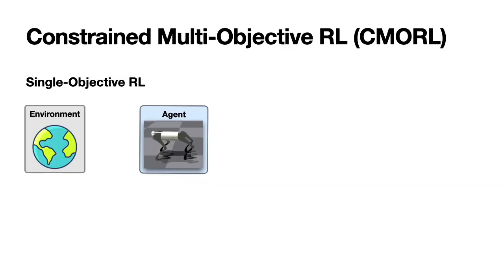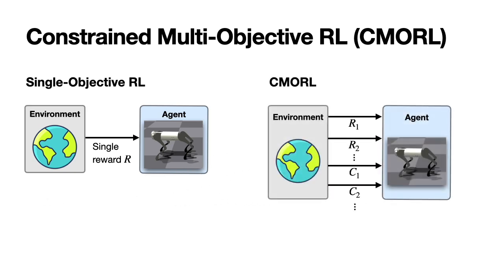Next, we utilize a constrained multi-objective reinforcement learning framework. In traditional reinforcement learning, the environment provides the agent with a single reward made up of several terms. However, in constrained multi-objective reinforcement learning, the agent receives multiple rewards and costs, with cost functions often corresponding to safety-related terms from the original single reward.